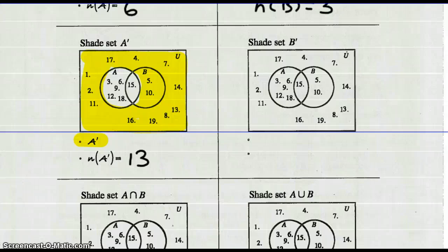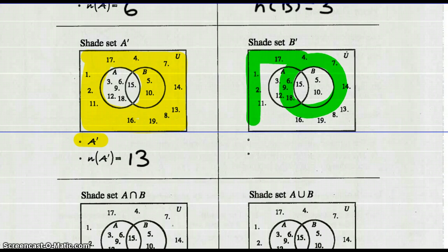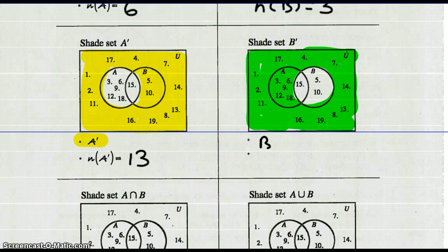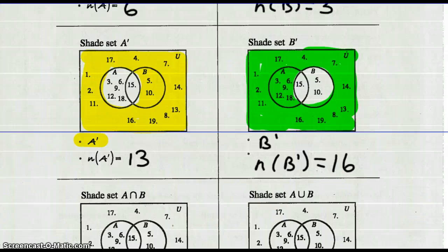Shade set not B — just like we did set not A, everything that is not in circle B; shade around that circle. So there is not B — B prime. And the number of elements in not B would be nineteen less three, or sixteen.